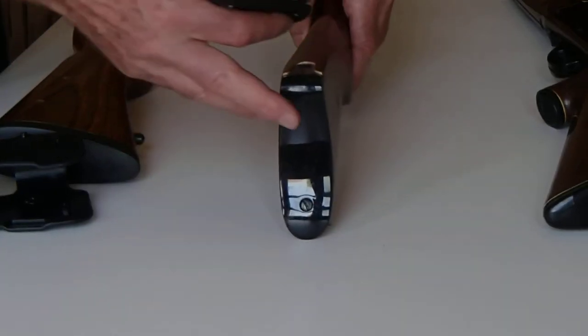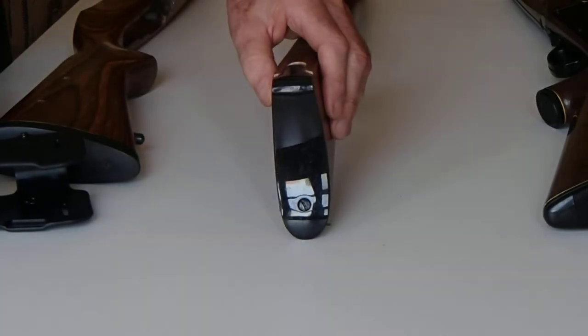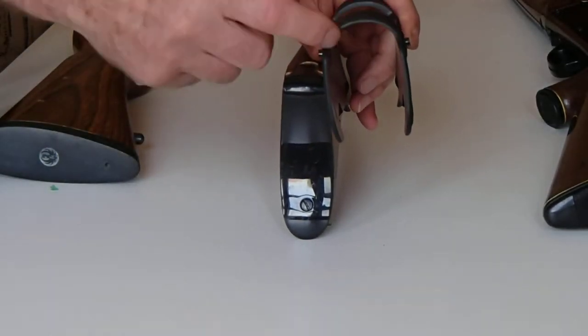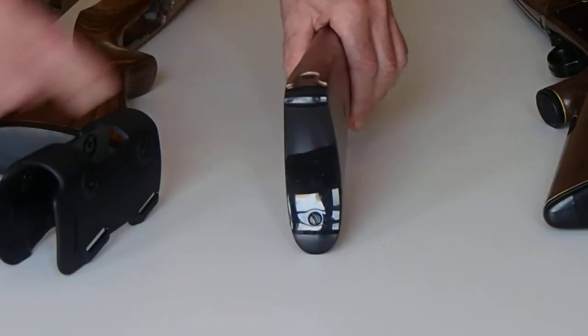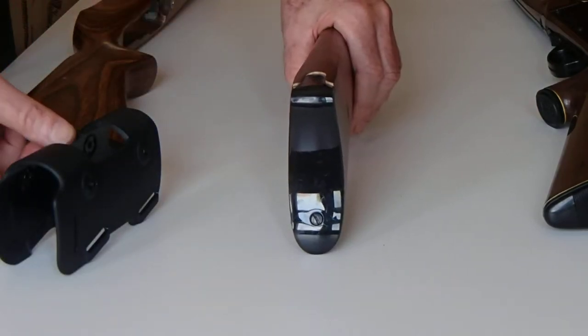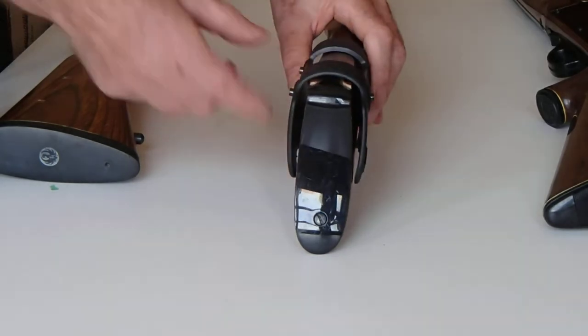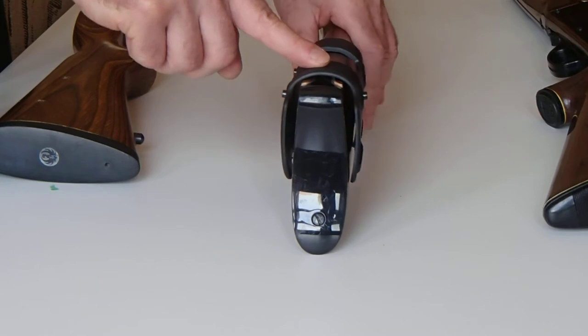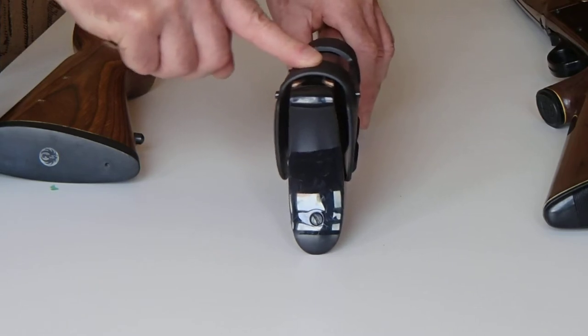Every Kydex cheek rest on the market except TacPro has a top shape like this, a single arch. And if you have a stock with a flat comb like this one, that's somewhat adequate because it creates two points of contact that help prevent side-to-side movement.